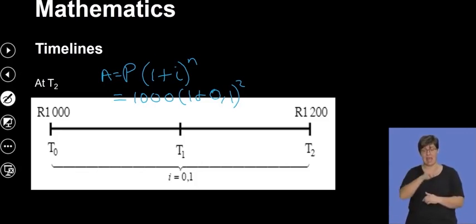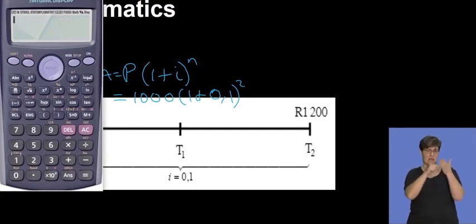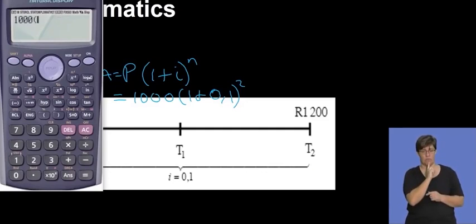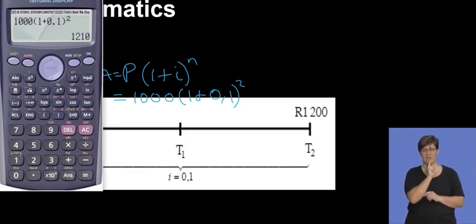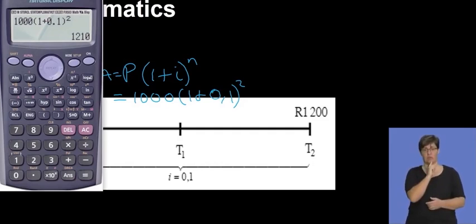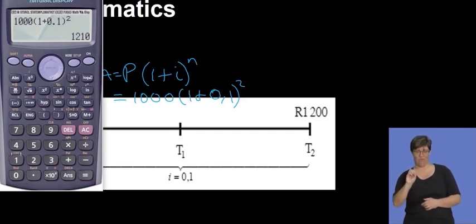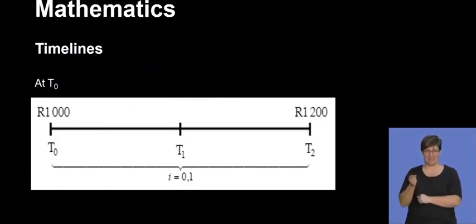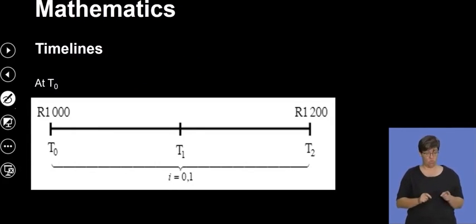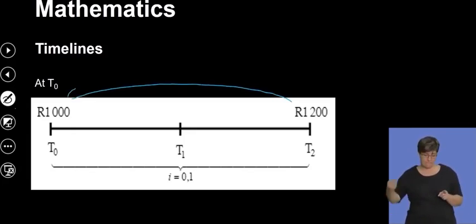On the calculator: 1 000 × (1 + 0.1)^2 gives us R1 210. So it's not strictly R1 200 — the actual amount is R1 210. You can see it's slightly higher than R1 200, but that is what is happening at that point when moving forward.